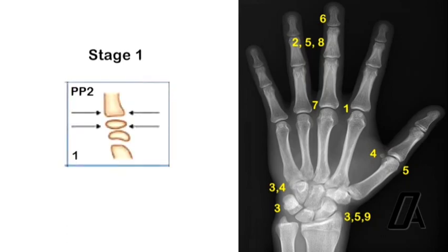In stage one, the epiphysis of the proximal phalanx of the index finger has the same width as the diaphysis. This stage occurs approximately three years before the peak of the pubertal growth spurt.